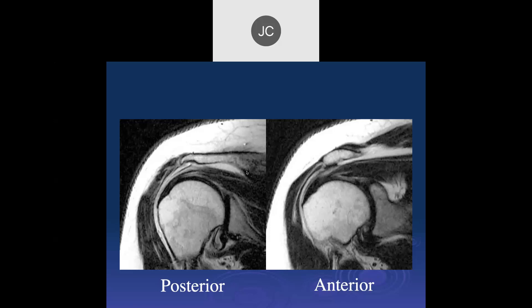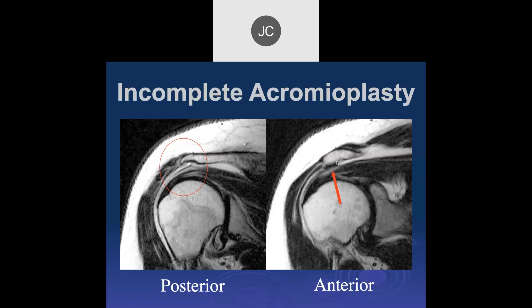Case: patient had shoulder pain, had surgery, but persistent pain after surgery. It looks like an acromioplasty was done, but there's a continued hooked appearance of the lateral acromion with undersurface irregularity. If Neer's theory is correct, impingement occurs at the anterior margin of the acromion; here the acromioplasty was done posteriorly while the anterior inferior osteophyte remained — probably an incomplete acromioplasty.